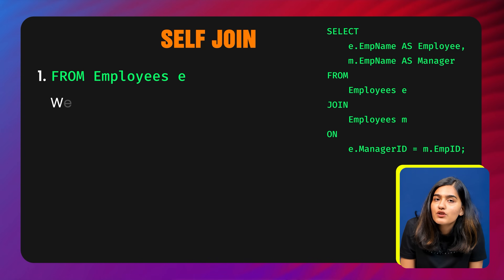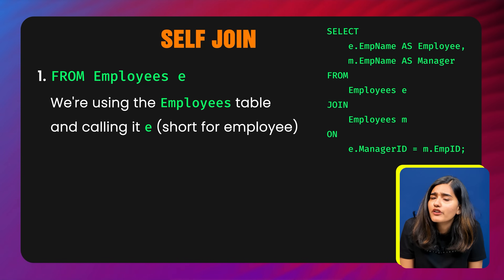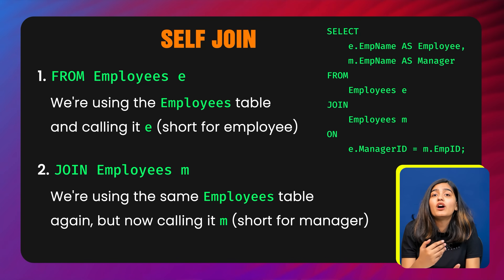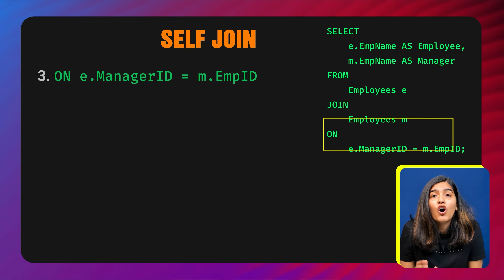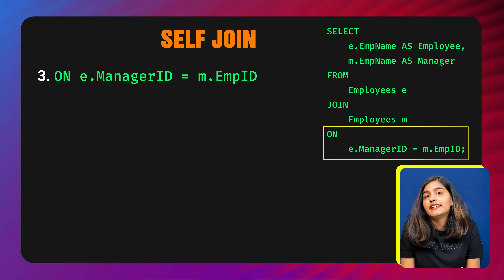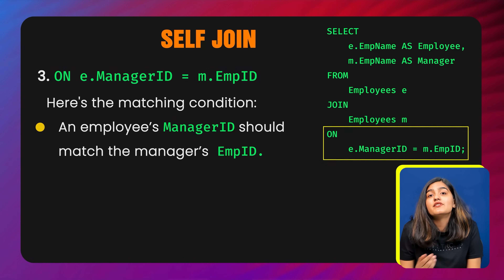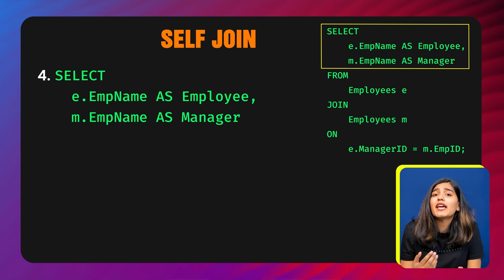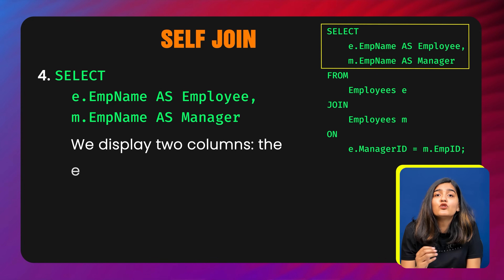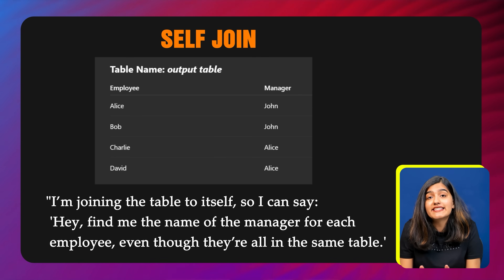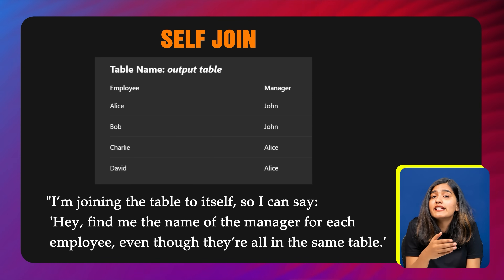In this query, FROM employees e uses the employees table and calls it e, short for employee. JOIN employees m joins the same employees table again but calls it m, short for manager. ON e.manager_id = m.emp_id is the matching condition — an employee's manager ID should match the manager's employee ID. SELECT e.emp_name AS employee, m.emp_name AS manager displays two columns: the employee's name and their manager's name. In simple words, the result says: I'm joining the table to itself so I can find the name of the manager for each employee, even though they're all in the same table.